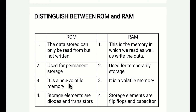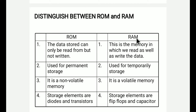ROM is a non-volatile memory because of permanent storage. This means that even after power loss, data is retained — ROM is non-volatile. The storage elements in ROM are diodes and transistors, while the storage elements in RAM are flip-flops and capacitors. These are the main distinguishing points between ROM and RAM.